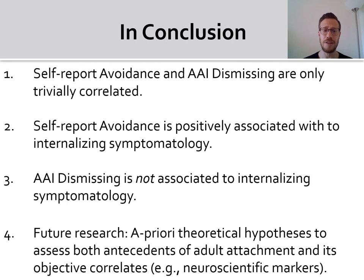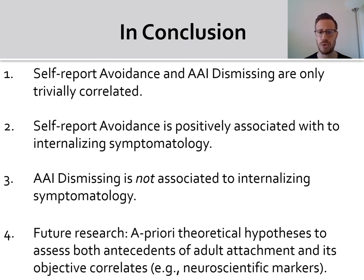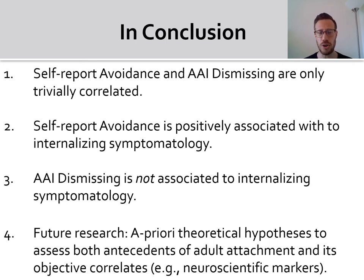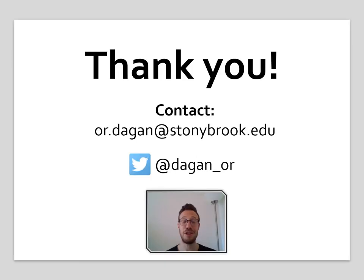In conclusion, we've seen that adult avoidance and dismissing only trivially correlate. Whereas self-report avoidance is positively associated with internalizing symptoms, AAI-dismissing is not associated with internalizing symptoms, at least when compared to secure individuals. Future research should focus on a priori theoretical hypotheses to assess both antecedents of adult avoidance or dismissing and their objective correlates, such as neuroscientific brain function markers. Thank you for taking the time to listen. Please do not hesitate to contact me and I hope we meet soon.